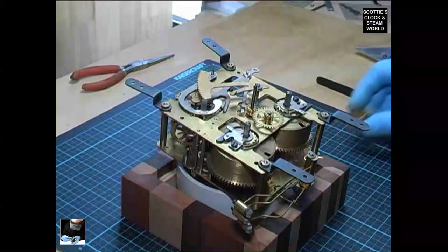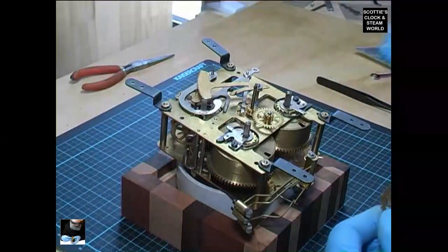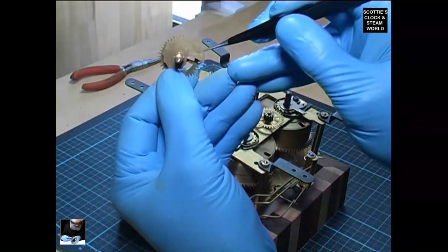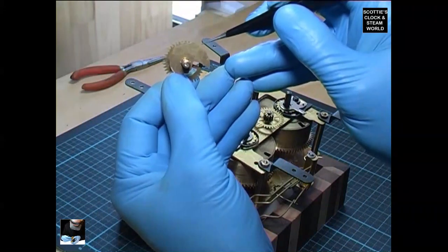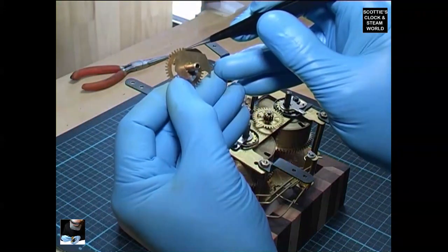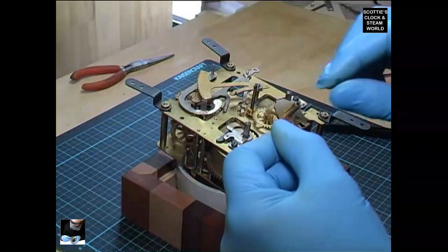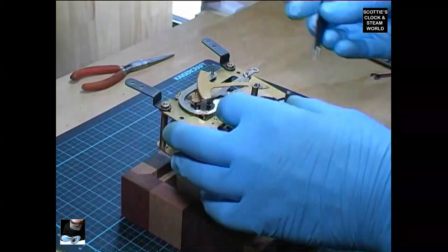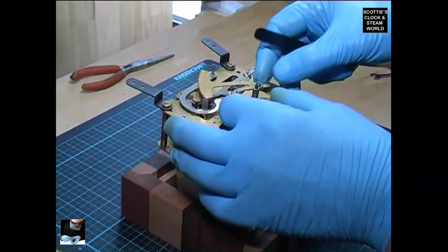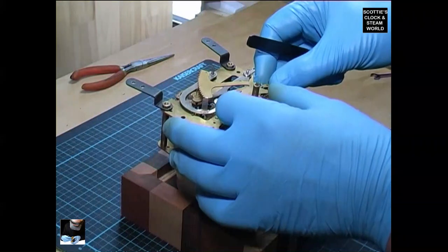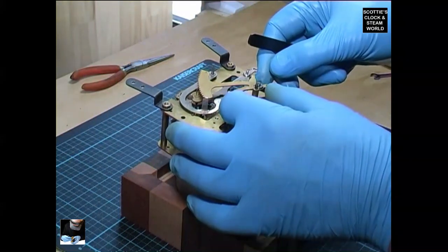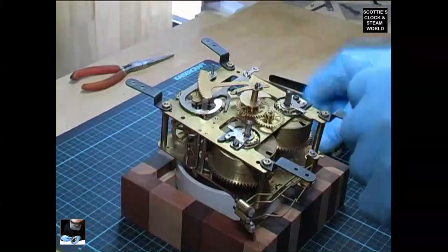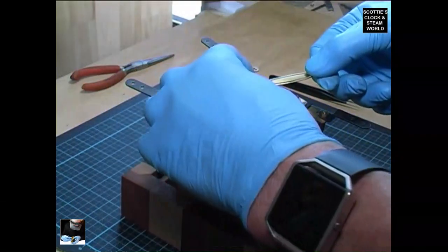We'll now put the snail on and then the hands and then test it again. Now we're looking for the fourth step: one, two, three, four. That's four o'clock. Now we'll put the hands on, four o'clock for the hour hand.